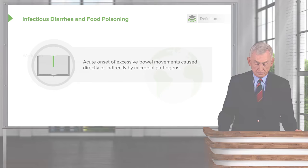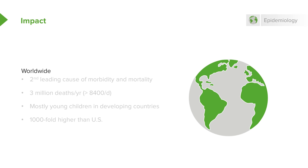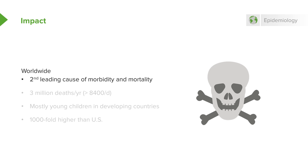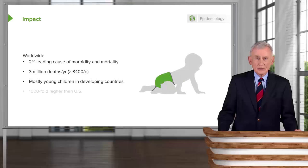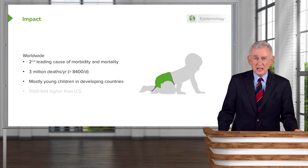It has a tremendous impact on the world. It's the second leading cause of morbidity and mortality, with 3 million deaths a year — that's more than 8,400 a day. Unfortunately, it affects young children in developing countries. The main reason is that they don't have a lot of fluid to start with, so if they start losing fluid, they lose blood volume and can get sick in a hurry.